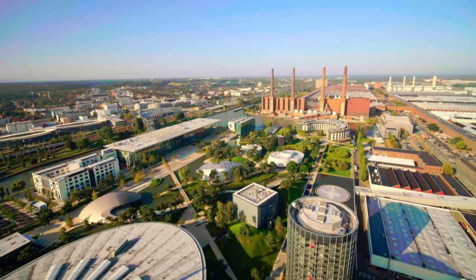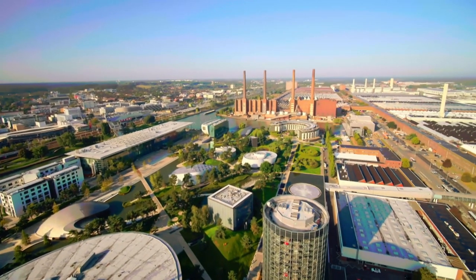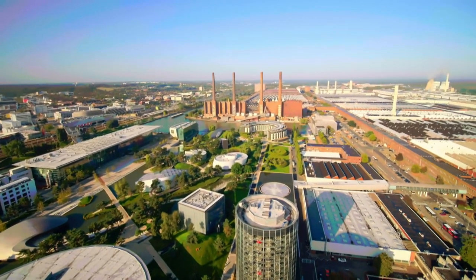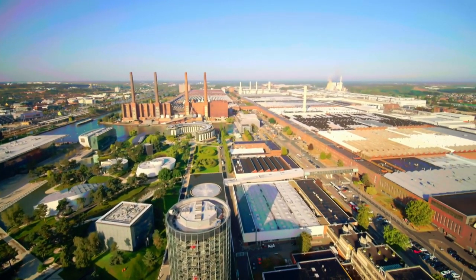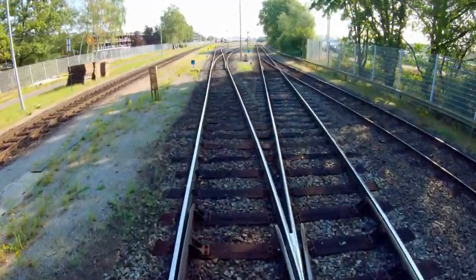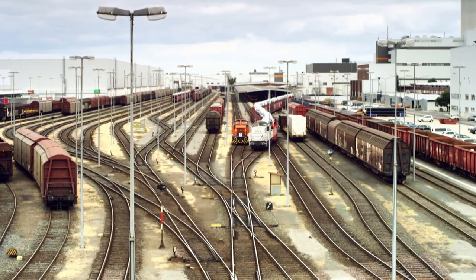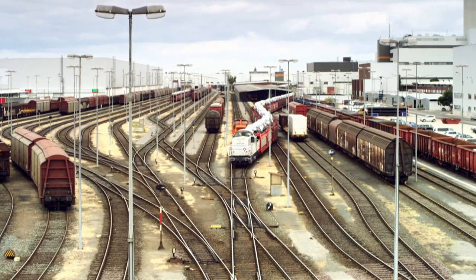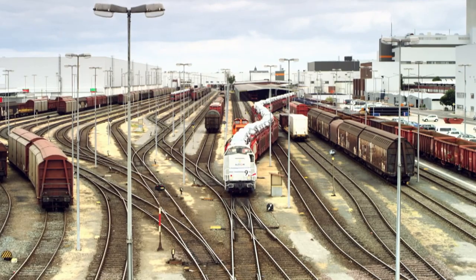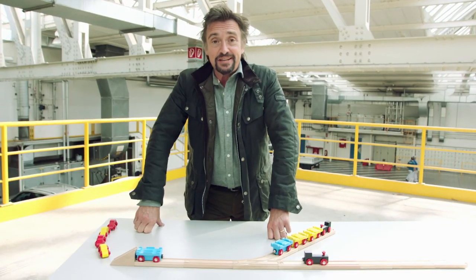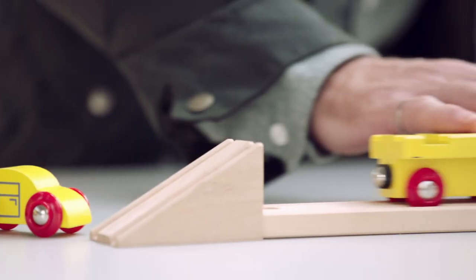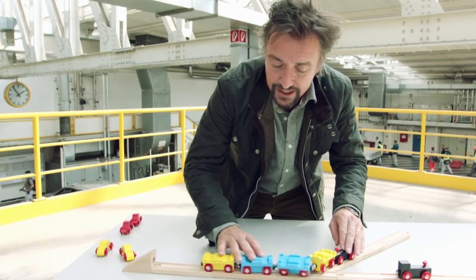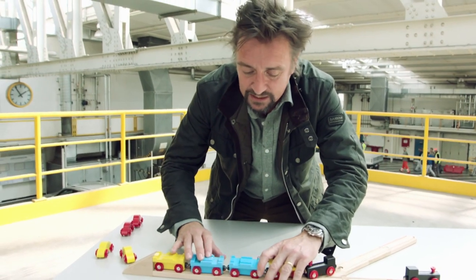When you produce enough cars every year to create a tailback from New York to Las Vegas, they have to be shifted off-site as quickly as they're made. Hence, 60 kilometers of track and the largest private rail station in Europe. But big infrastructure comes with its own problems. In the old days, freight leaving a factory might be loaded onto a train like this. A complete trainload of empty wagons would be shunted into place at dispatch.